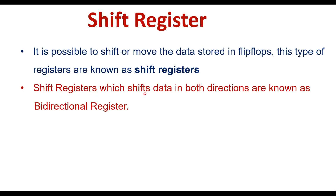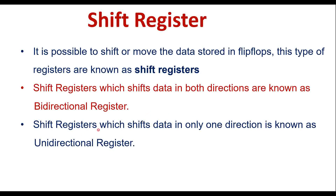Shift registers which shift data in both directions are known as bidirectional registers. We understood that a register stores more than one bit of data, and it is possible to shift the data either to the right side or to the left side. If the shift register shifts data in only one direction, it is known as a unidirectional register.